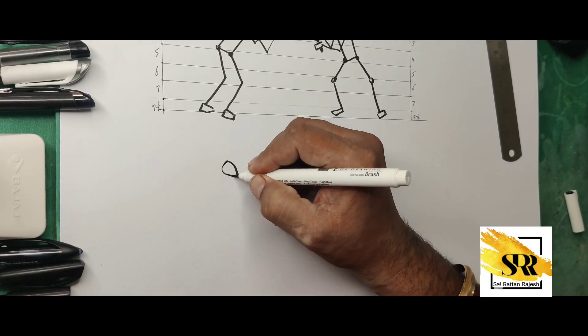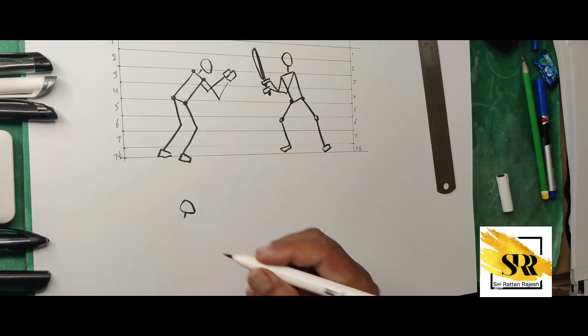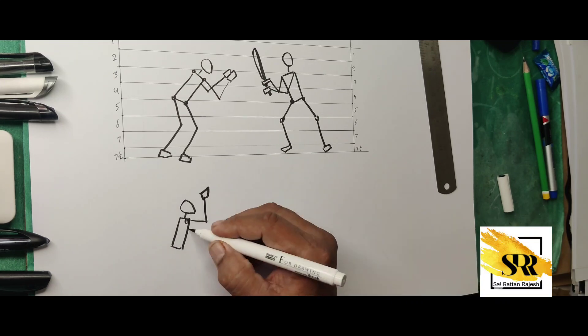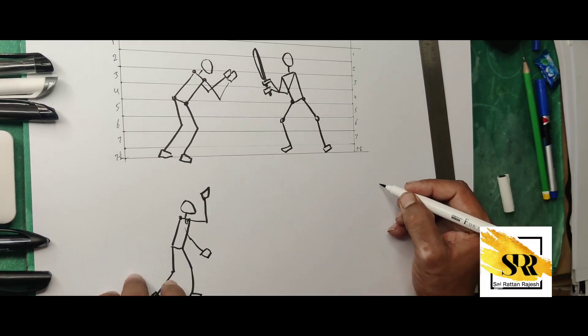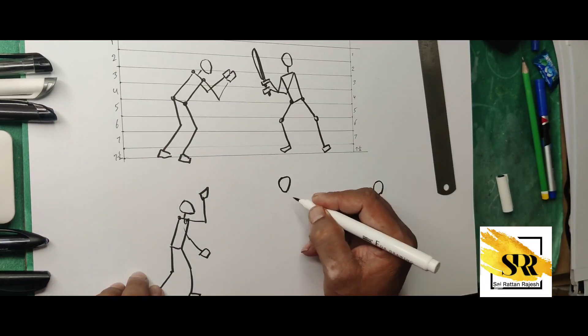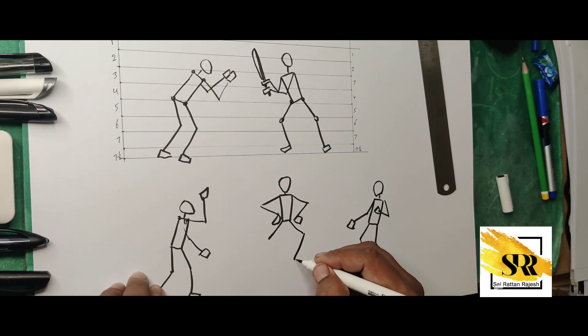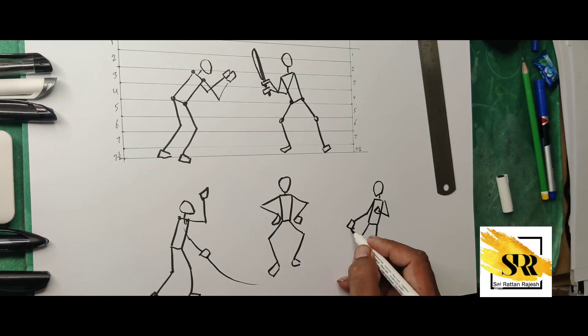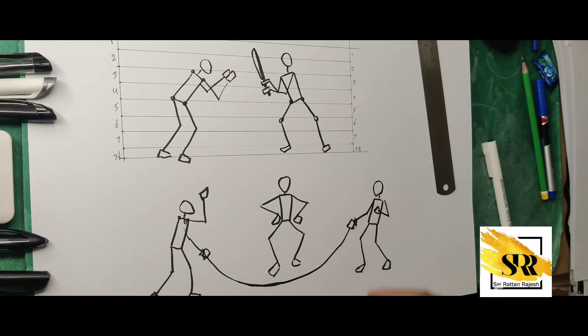As well as suppose children are playing or a human body figure is playing. So your hand posture is going in this position. Accordingly, we have to reduce the line accordingly.